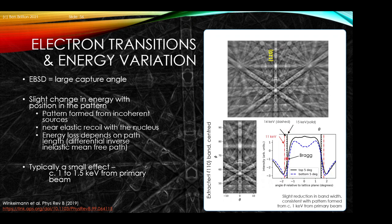For a 15 kiloelectron volt probe, the energy is very close to the primary beam across the pattern, with a very slight change in bandwidth. This is important for finer analyses because the diffraction — unlike the background — arises from near-elastic recoil with the nucleus. The energy loss depends a little on path length, giving variations as we move down the pattern. This is best described by a differential inverse elastic mean free path calculation, which differs from the continuous slowing down approximation used in tools like Casino Monte Carlo simulations.